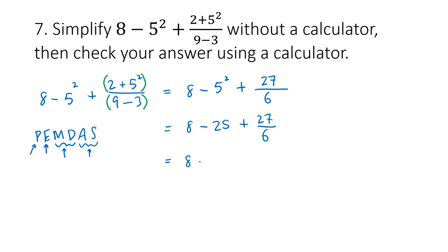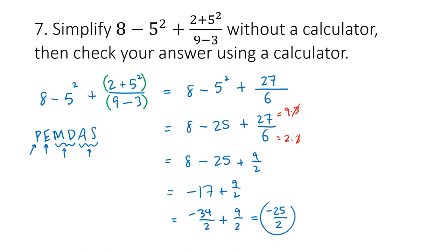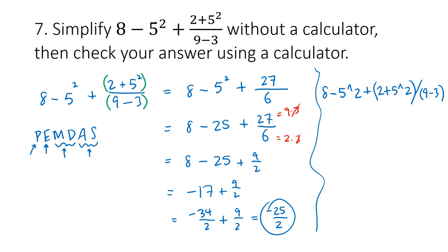Now multiplication and division: 27 divided by 6 simplifies — 27 is 9 times 3, and 6 is 2 times 3, so those threes divide out giving 9 over 2. Then addition and subtraction: 8 minus 25 is negative 17, plus 9 over 2. Creating a common denominator: negative 34 over 2 plus 9 over 2 gives negative 25 over 2. When entering this in a calculator, make sure to use parentheses to group the numerator and denominator separately.